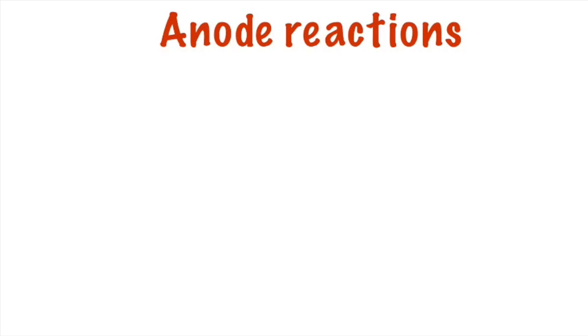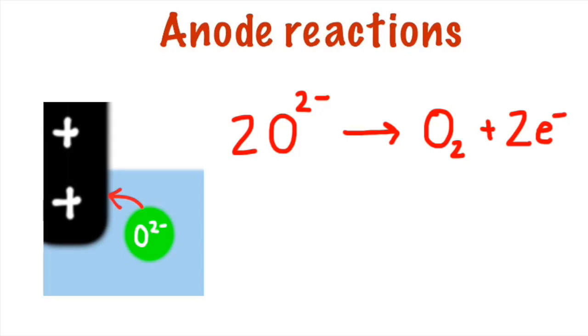If we now look at the anode reactions, the O2- ion is attracted to the positive anode and as it's attracted towards the anode, it loses 2 electrons. So O2- loses those 2 electrons to form an oxygen atom but I hope you know that oxygen never exists as a single atom, it always bonds to another oxygen atom to form diatomic molecules. So we need 2 O2- ions which will give us our diatomic oxygen, O2 and of course that leaves us with 4 electrons being released.